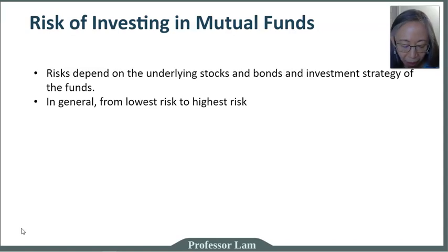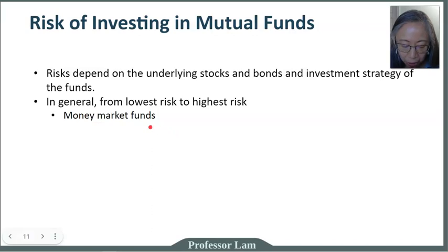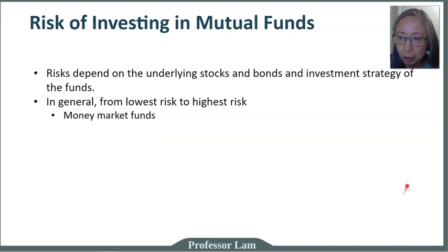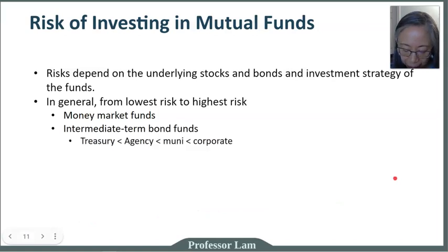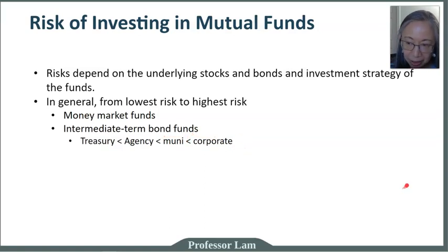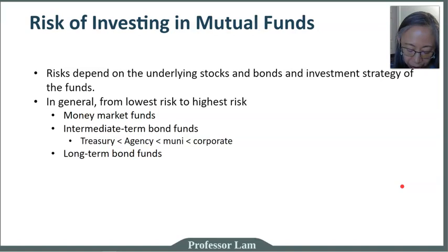The lowest risk will be money market funds — these tend to invest in T-bills or corporate repos, very short term, one to three months, less than six months, so they are very low risk. The next will be intermediate-term bond funds. When it comes to bond funds, the lowest risk is Treasury, then agency, then municipal bonds, and then the highest risk will be corporate bonds. Long-term bond funds tend to focus on either corporate bonds or Treasuries.